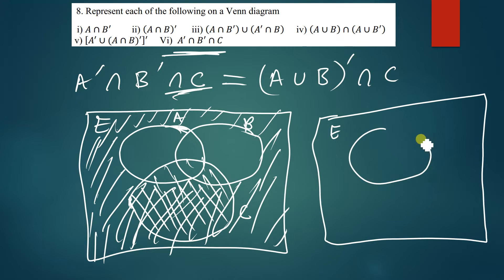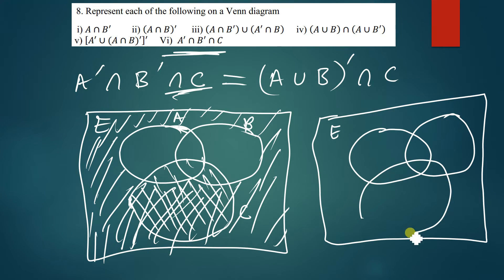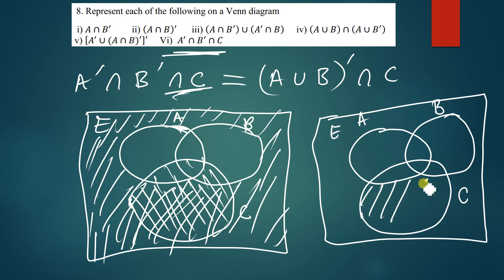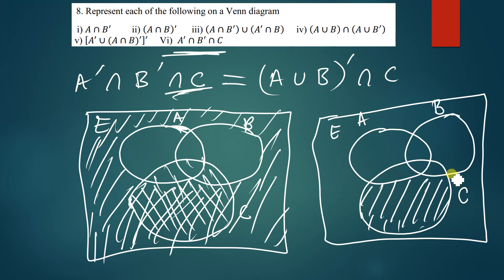We have A, B, and C drawn. Our final solution is just this part — the region of C that is outside both A and B. Thank you very much for watching today's tutorial.